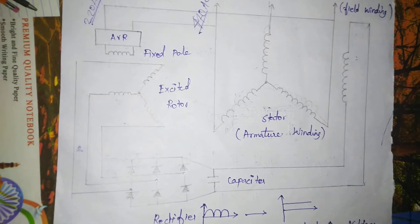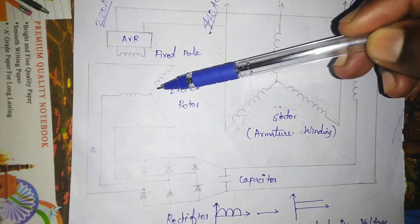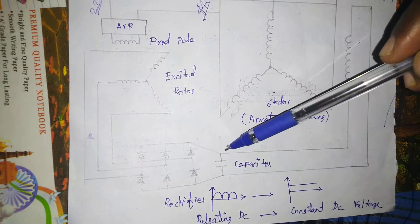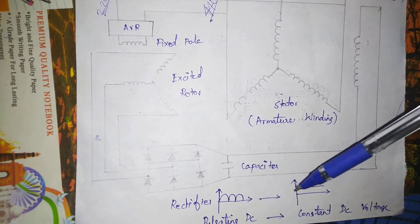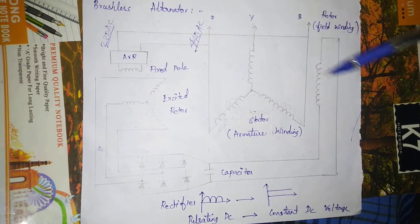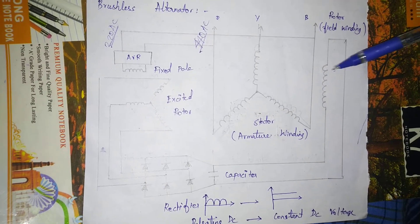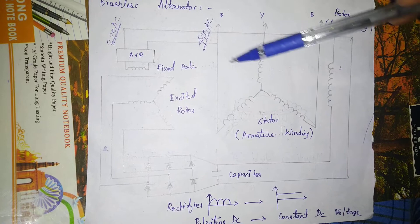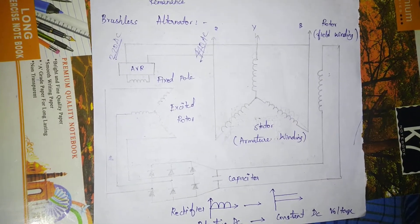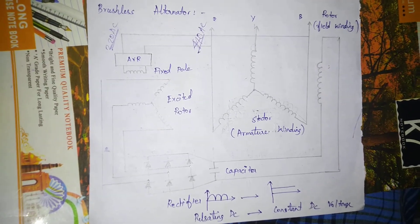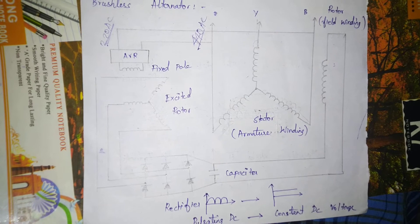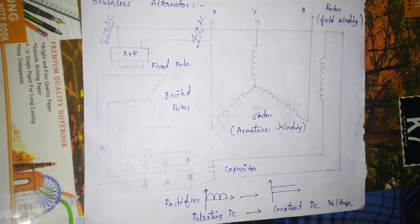Here, the exciter produces AC which is converted to DC by the rectifier. We need constant DC voltage, so we use capacitors for filtering to get constant DC for the field. This way, we don't need brushes or slip rings — this is the brushless, pressureless alternator. That's the basics of the alternator. This is the end of the chapter, see you in the next video.